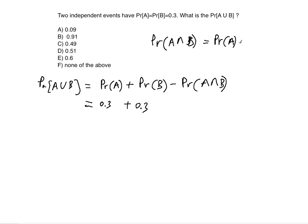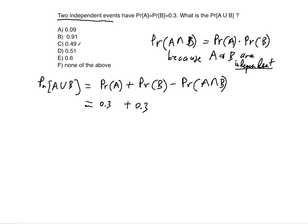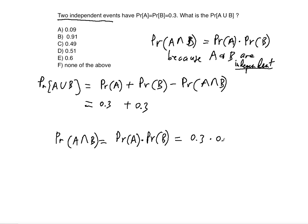Because A and B are independent events, the probability of A and B is equal to the probability of A times the probability of B. So the probability of A and B equals 0.3 times 0.3.